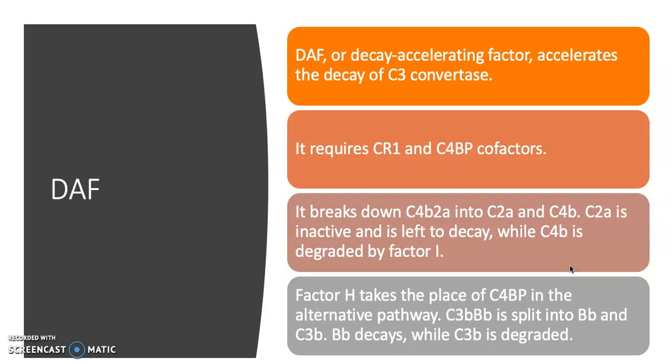There's also DAF, the decay accelerating factor, and it accelerates the decay of C3 convertase, as the name implies. It requires two cofactors, CR1 and C4BP. It breaks down C3 convertase into its components, C2A and C4B. C2A is inactive on its own and is left by the body to decay, but C4B has to be degraded by factor I.